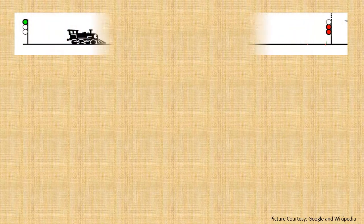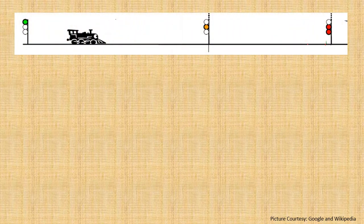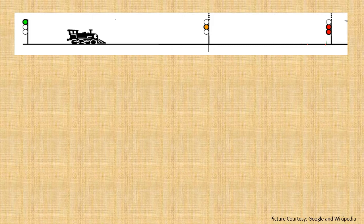Every time a driver sees a yellow signal he slows down the train, and when he sees the red one he applies the brake and the train stops just before the signal — every time, with no failure. How does it happen? We are going to go deep and learn how it happens.